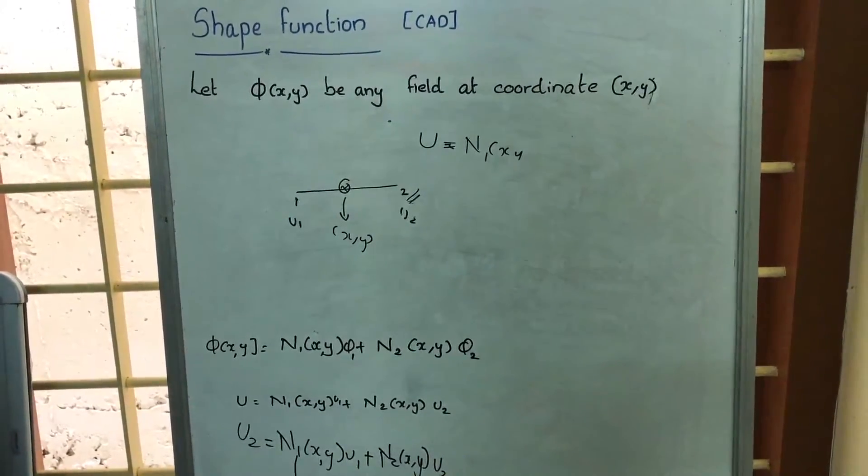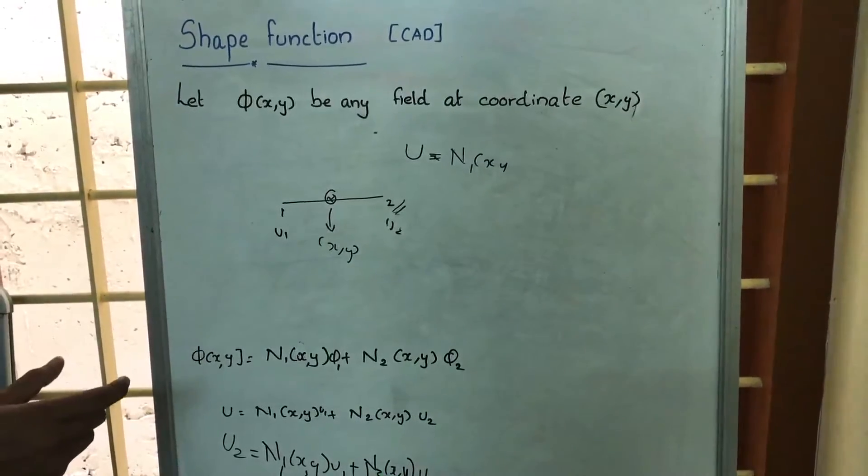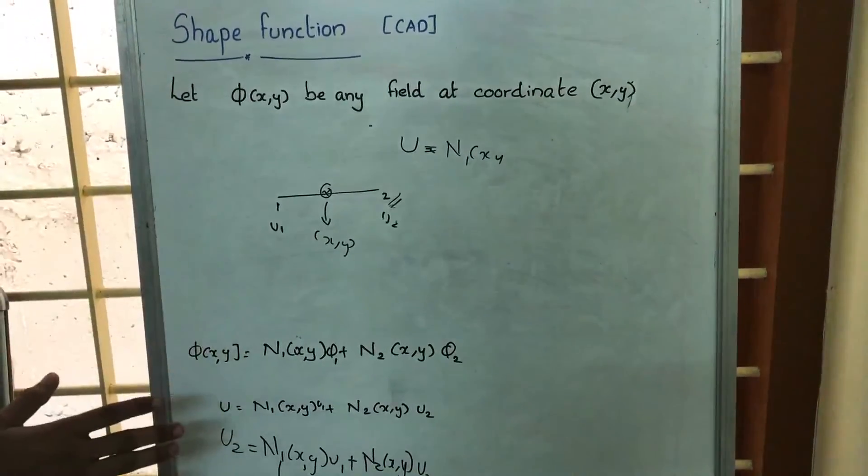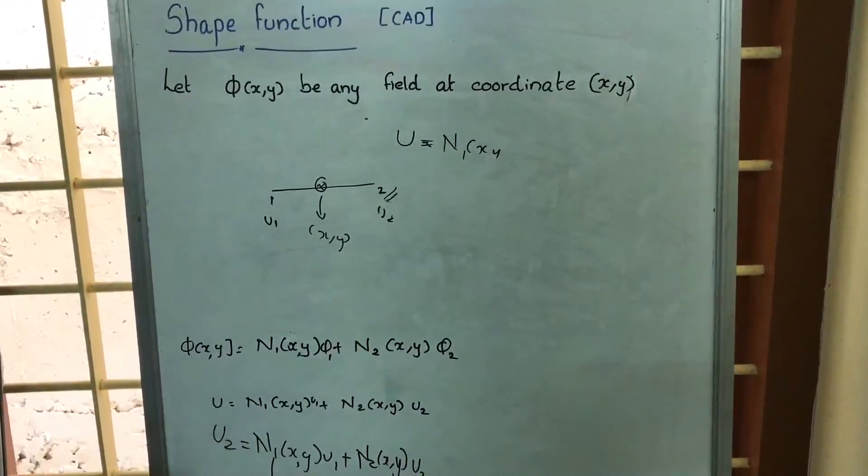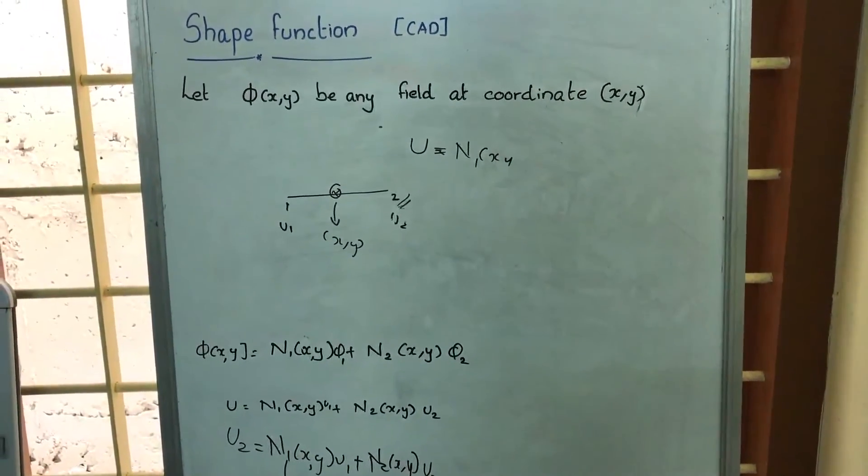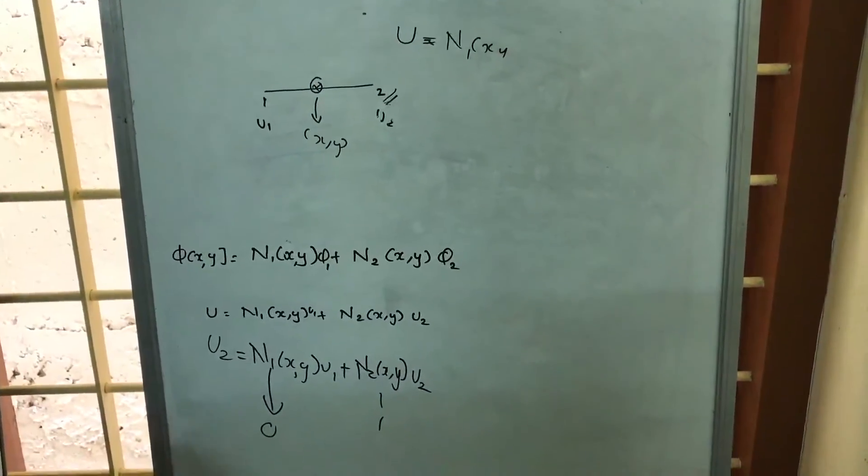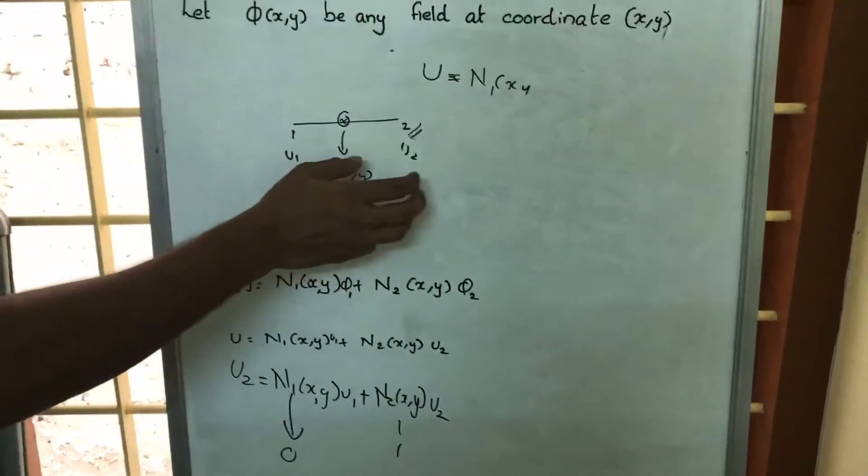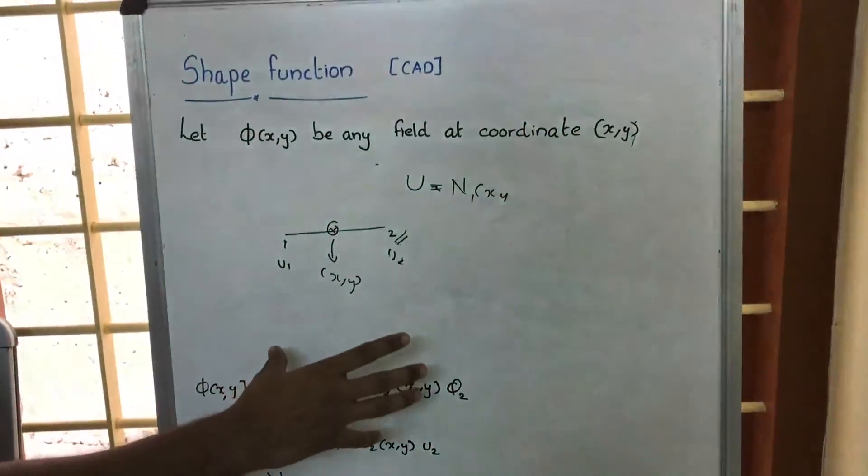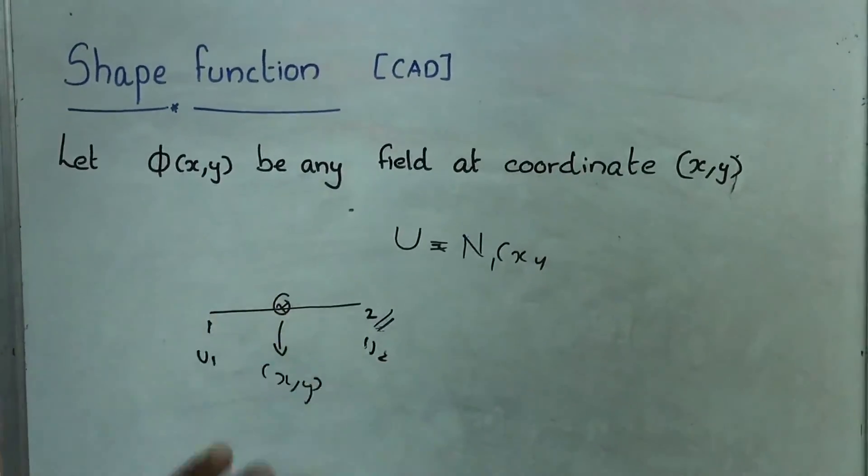So this is the property of the shape function. According to the node we are considering, the shape function of that particular node will obtain a unity value and the other nodes will be 0. So, in short, shape function is a function that we are using to interpolate the given quantities available u1 and u2 to obtain the field variables in other intermediate points.